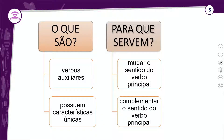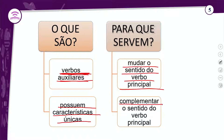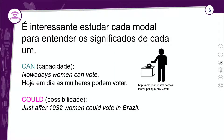Vamos começar! Os verbos modais são verbos auxiliares com características únicas. São auxiliares que têm tradução. Eles servem como uma flexão para o verbo principal e mudam ou complementam o sentido dele. O primeiro verbo modal que geralmente aprendemos é o 'can'.